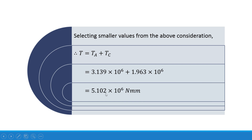The total torque T acting at the junction equals Ta + Tc = 3.139 × 10⁶ + 1.963 × 10⁶ N·mm, which is the safe value for the given compound shaft. In this way we can find the maximum torque in case of a compound shaft. Thank you very much for watching.